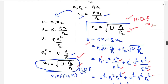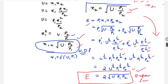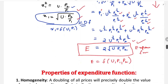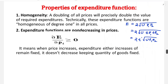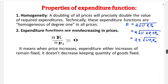Now we discuss the properties of expenditure functions. The first property is homogeneity: a doubling of all prices will precisely double the value of required expenditure. Technically, the expenditure function is homogeneous of degree 1 in prices.